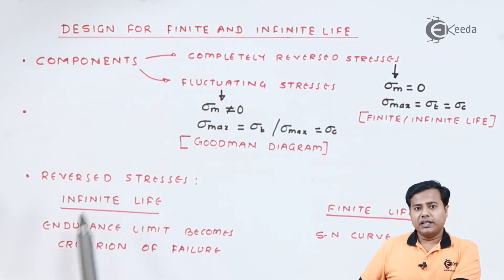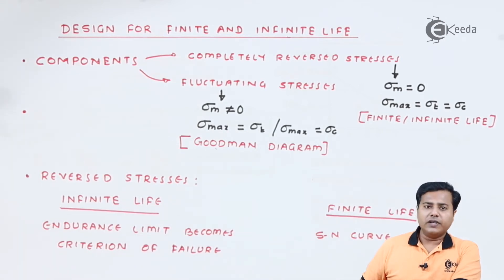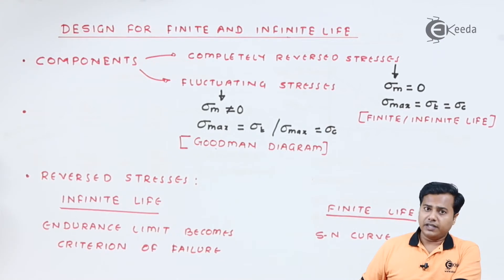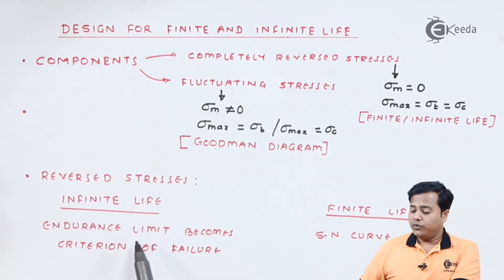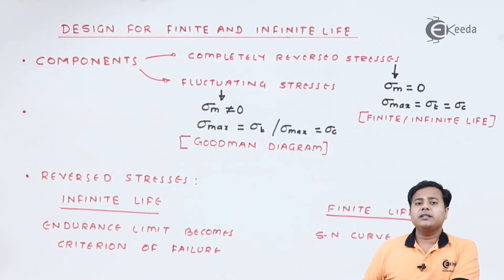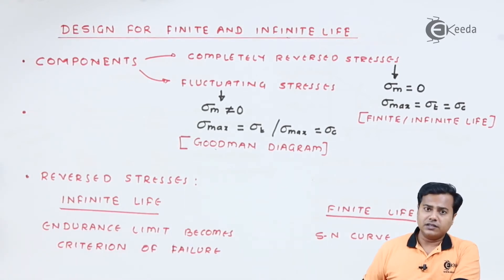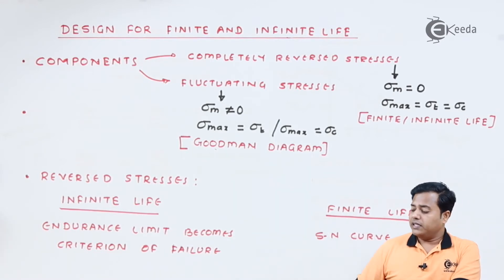Let us move ahead with reverse stresses. In case of reverse stresses, there are two criteria we can use. The first one is infinite life criteria and the second one is finite life criteria. In case of infinite life criteria, the endurance limit becomes the criteria of failure, so we have to design everything that falls below the endurance limit. When finite life is concerned, the SN curve is used for design purposes.